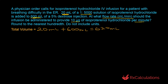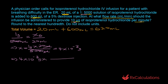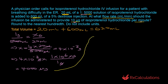The 1-in-5000 concentration means 1 gram of drug in 5000 mL of solution. To find the amount in 20 mL: x = 1 g × 20 mL ÷ 5000 mL = 4 × 10⁻³ grams. Converting to micrograms: 4 × 10⁻³ g × 10⁶ micrograms per gram = 4000 micrograms. So the 620 mL volume contains 4000 micrograms of isoproterenol hydrochloride.